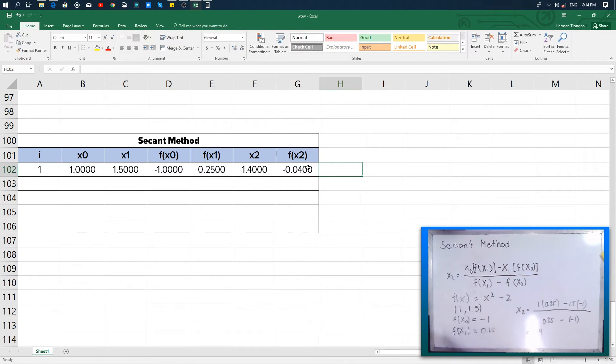We might as well notice that f(x₂) and f(x₀), if we multiply them we will get the product which is positive in sign because negative times negative is positive. So therefore in the next iteration or iteration 2, we will change the value of x₀ to our previous value of x₂. That will be our new x₀.